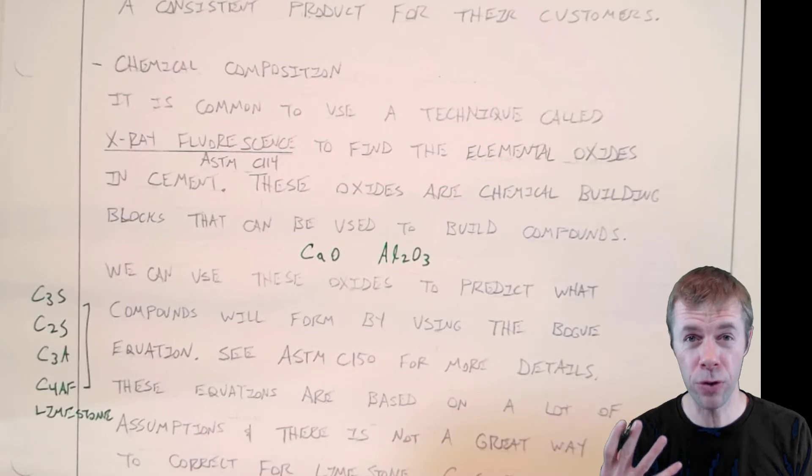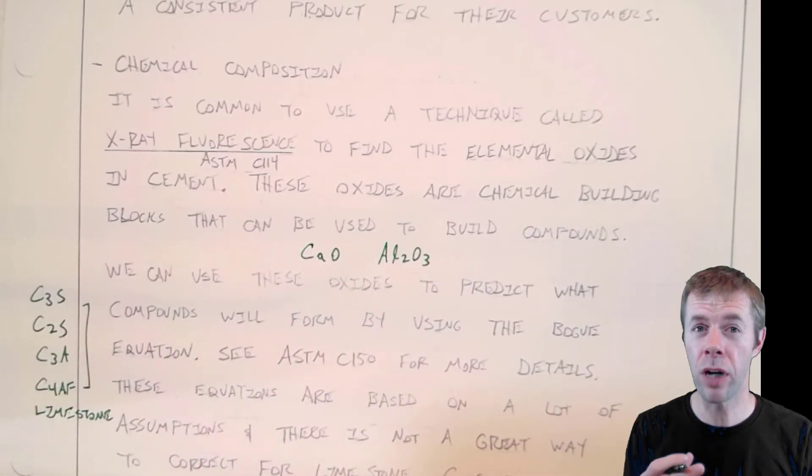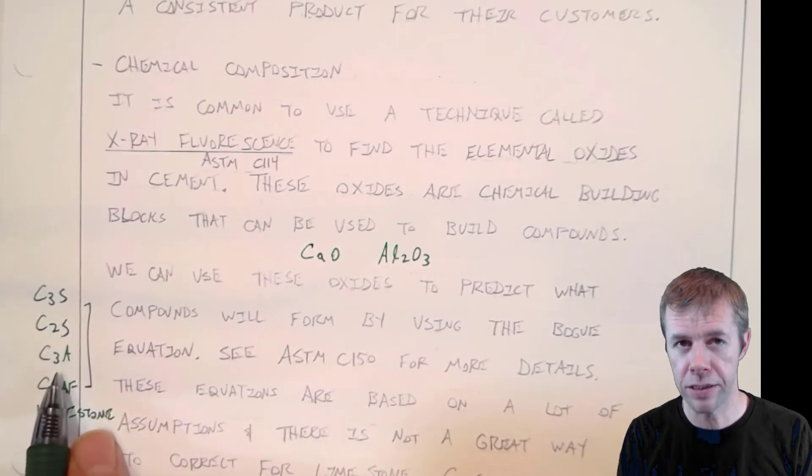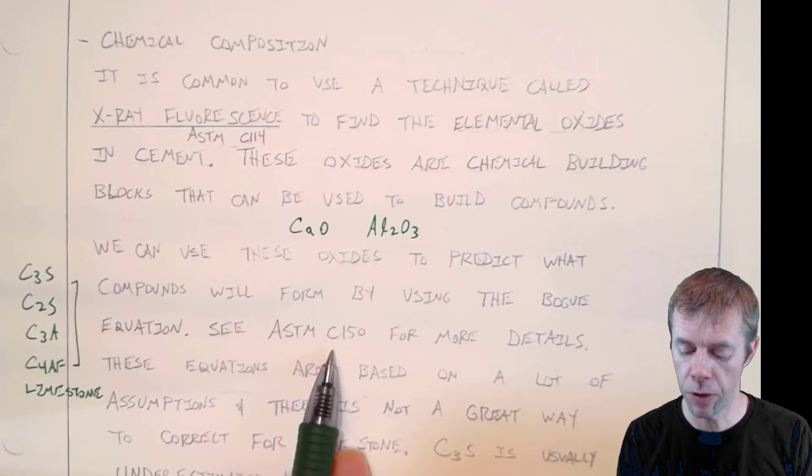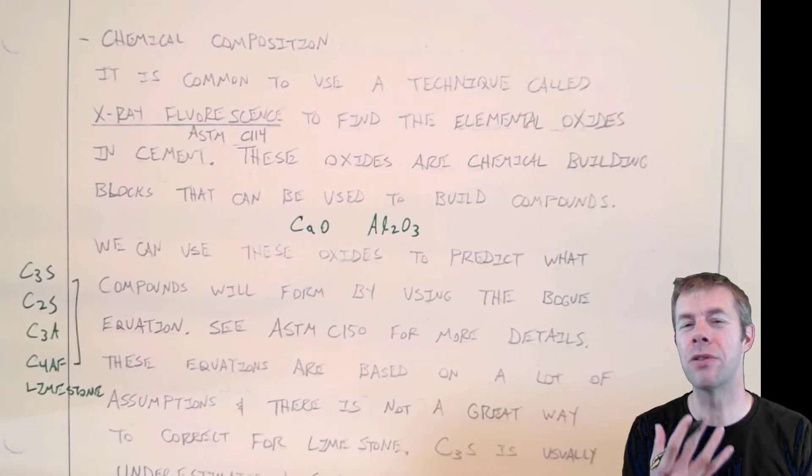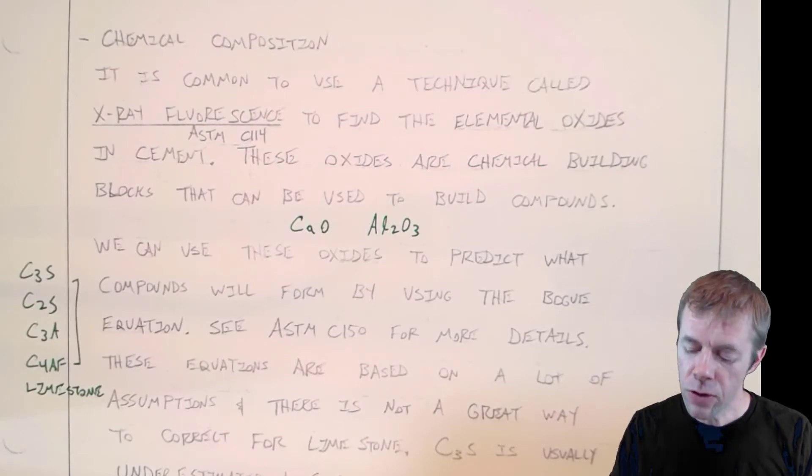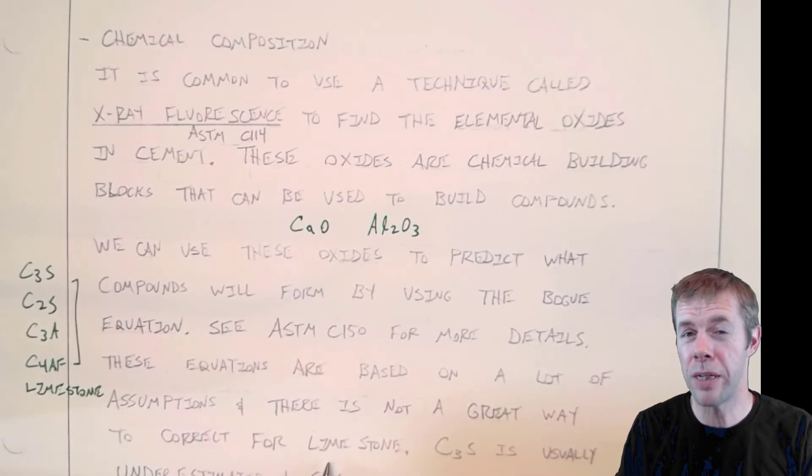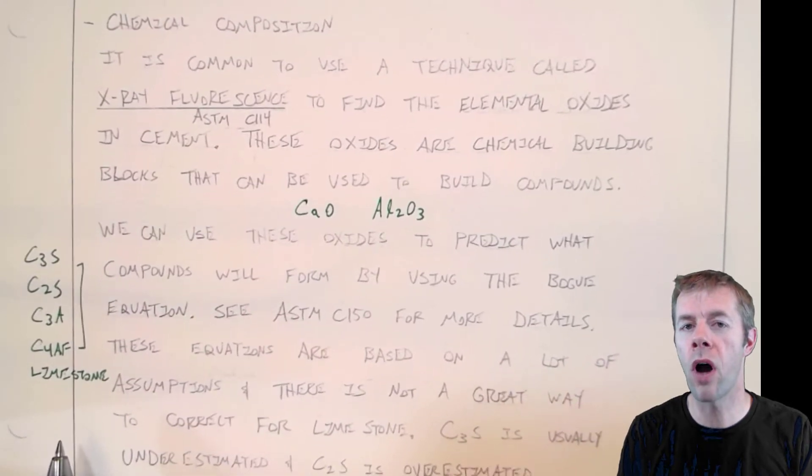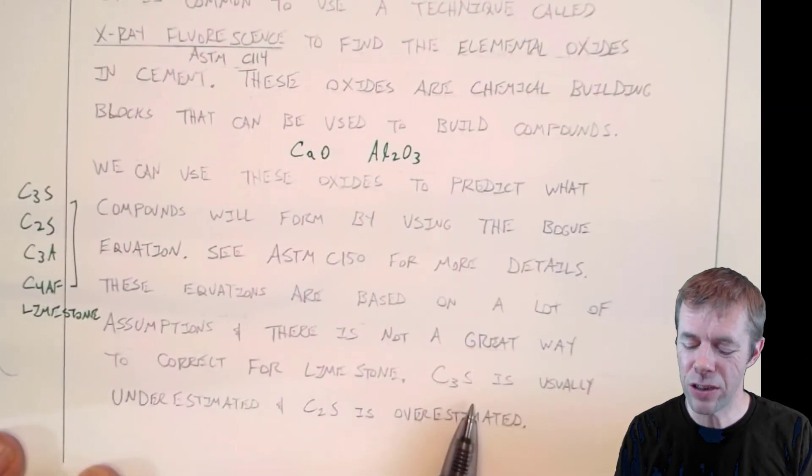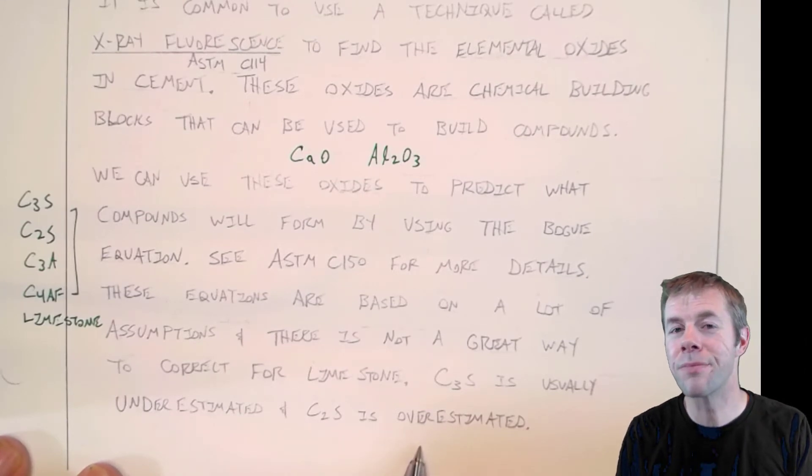He basically takes all these different oxides and calculates or estimates, based off a bunch of thermodynamic equations, how much C3S, C2S, C3A, and C4AF is supposed to be inside the cement. You can get these equations by looking up ASTM C150 for more details. They're based on lots of assumptions and they're not always right. But do we need to be perfect or do we need to be close? Most of the time in engineering, being close is good enough. There's also not a great way to correct these equations for limestone, which has been added relatively recently. On average, the C3S content is usually underestimated and the C2S content is typically overestimated with this Bogue equation.